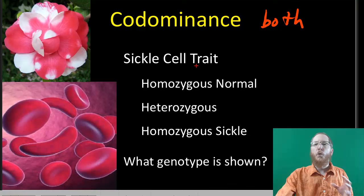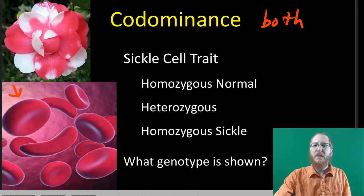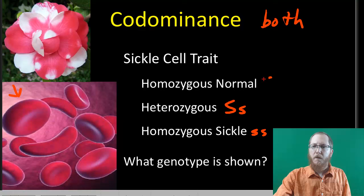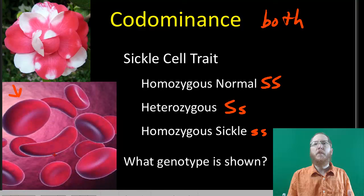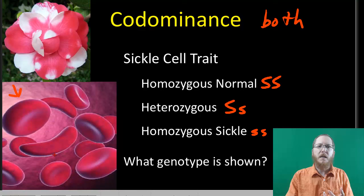One common example of codominance is sickle cell. If you're homozygous for normal blood cells, all your red blood cells will look vaguely donut-shaped with a depression — that's a normal red blood cell. If you're a heterozygote with one healthy allele and one sickle cell allele, you'll have a mix: some sickle-shaped red blood cells and some normal ones. If you're homozygous for sickle cells, you'll have all sickle cells. This is a problem because sickle cells tend to clump, they don't live as long causing anemia, and they can cause organ failure and pain — especially if untreated.